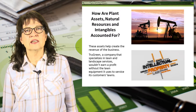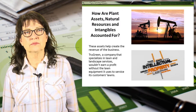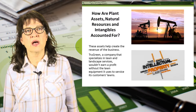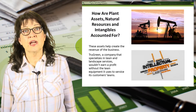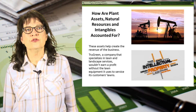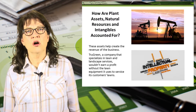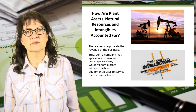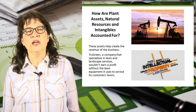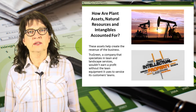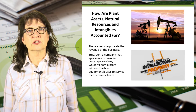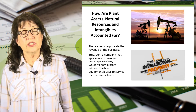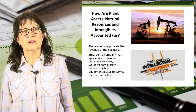How are plant assets, natural resources, and intangibles accounted for? Plant assets, natural resources, and intangibles are some of the most important assets on the balance sheet — these assets help create the revenue of the business. For example, TruGreen, a company that specializes in lawn and landscape services, wouldn't earn a profit without the lawn equipment it uses to service its customers' lawns. ConocoPhillips wouldn't have made a $12.4 billion profit in 2011 without its natural resource of oil reserves. And we are familiar with McDonald's Golden Arches trademark, which is an intangible asset that definitely has contributed to their revenues.